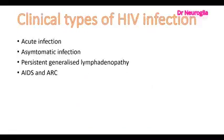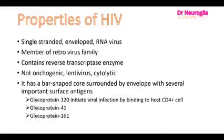The clinical types of HIV infection are: acute infection, asymptomatic infection, persistent generalized lymphadenopathy, AIDS and ARC. The properties of HIV: it is a single-stranded enveloped RNA virus, a member of the retrovirus family, contains reverse transcriptase enzyme, is a non-oncogenic lentivirus, and is cytolytic.